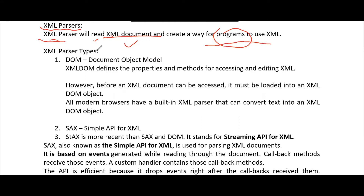So there are two types of XML parsers. The first one is DOM, and the second one is SAX — the SAX parser.